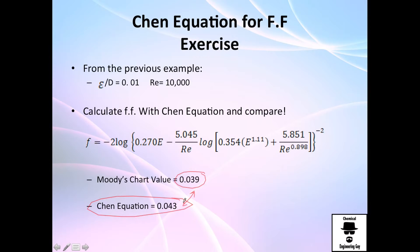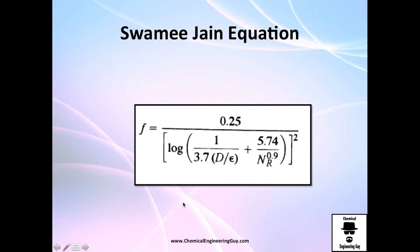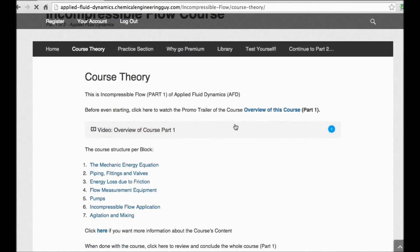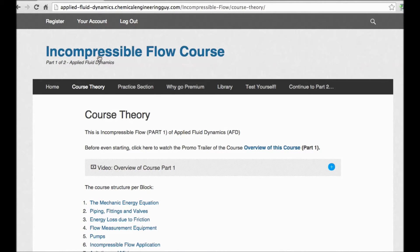0.039, and my value was 0.043. So it's kind of near actually. Yeah, why not use Chen equation instead of Moody's diagram?